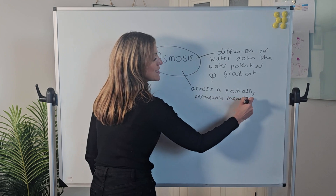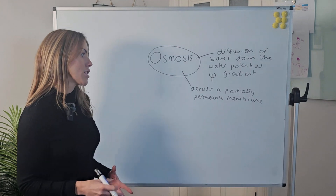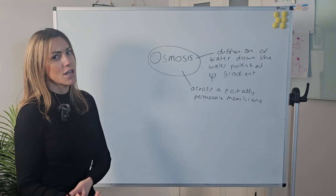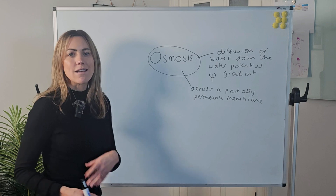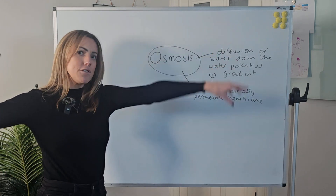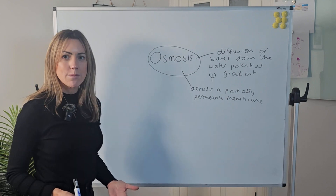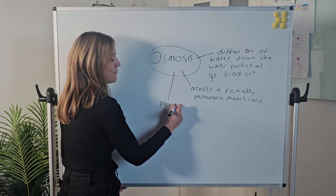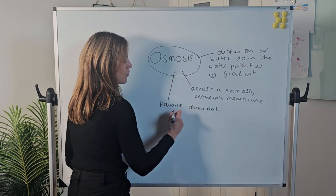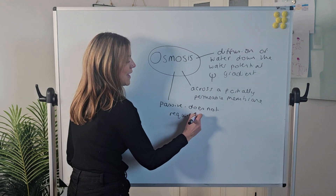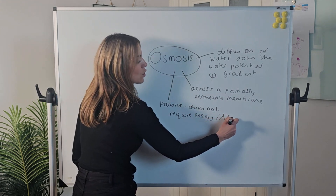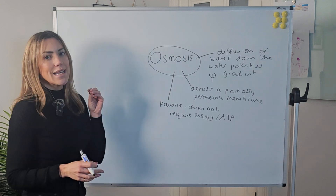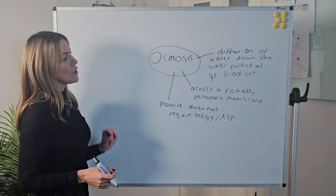For example, the cell surface membrane is a partially permeable membrane. This is different to diffusion, because diffusion doesn't have to take place across a partially permeable membrane — you can spray some air freshener and it will diffuse across the room. Osmosis always takes place across a partially permeable membrane. Just like diffusion, it is passive, which means it does not require energy or ATP to be hydrolyzed to release energy.